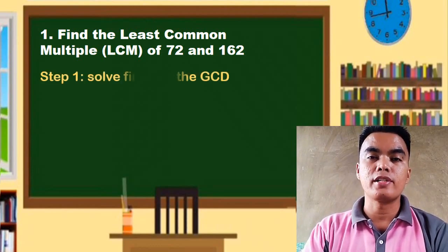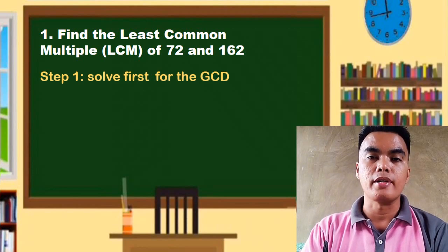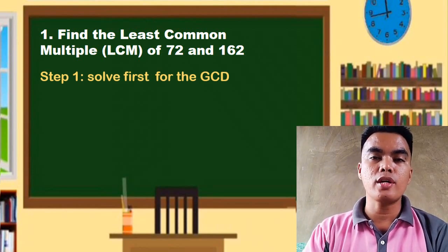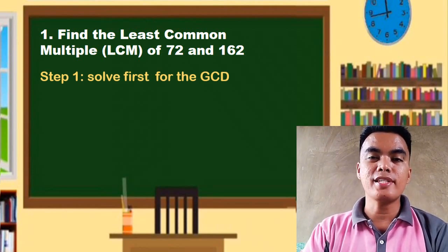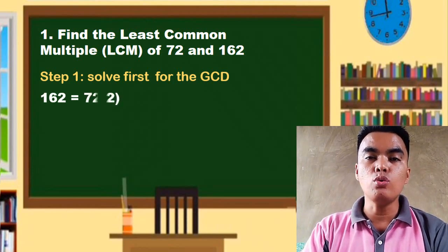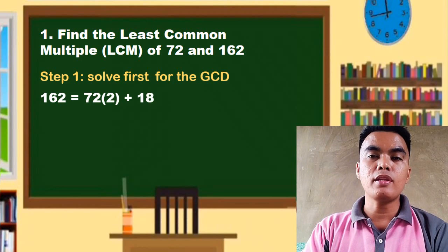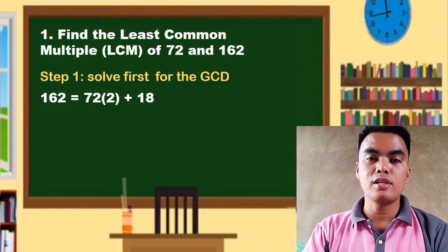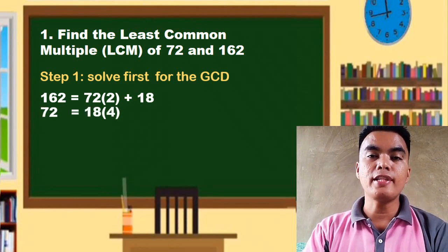you must find first the GCD of these two numbers. So same procedure as we did a while ago. 162 equals 72 times 2 plus 18, because 72 times 2 plus 18 is equal to 162. 72 equals 18 times 4...